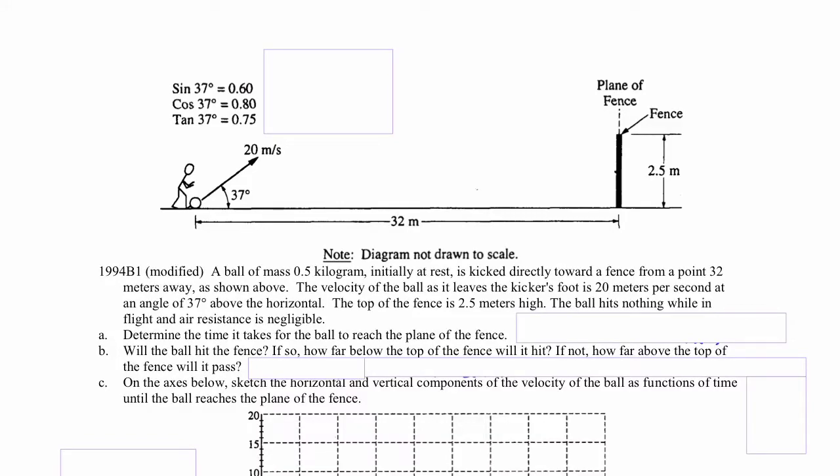A ball of mass 0.5 kilograms, initially at rest, is kicked directly toward a fence from a point 32 meters away, as shown above. The velocity of the ball as it leaves the kicker's foot is 20 meters per second at an angle of 37 degrees above the horizontal. The top of the fence is 2.5 meters high. The ball hits nothing while in flight, and air resistance is negligible.